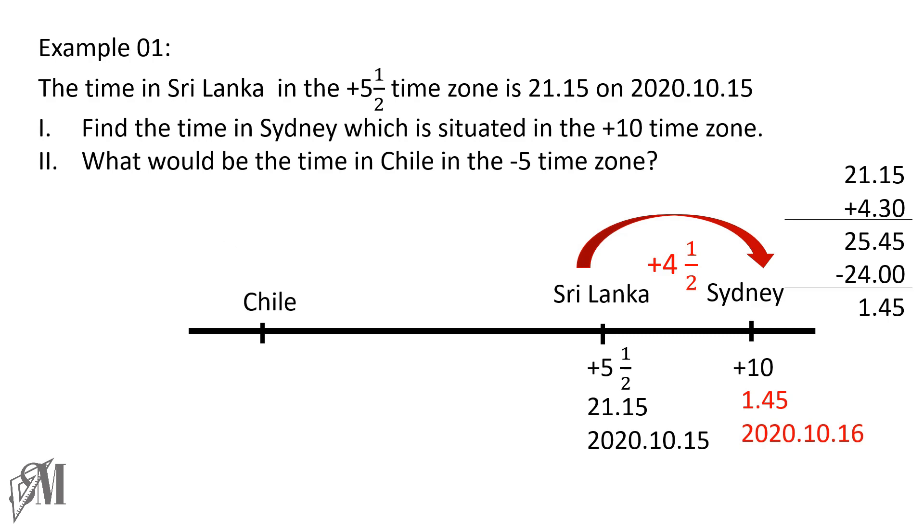And let's move on to the second part of the question, that is the time in Chile. When it comes to Chile, Chile is in the -5 time zone. So from +5.5 to -5, we have to skip zero. So from +5.5 to zero, there are 5.5 time zones. From there to -5, another 5 times. All together, -10.5 time zones we have to pass. That means the time duration is -10 hours and a half. So we subtract 10.5 from the time in Sri Lanka, that is 21:15, so you get 10:45. Therefore, the time in Chile is 10:45, and the date will not change.